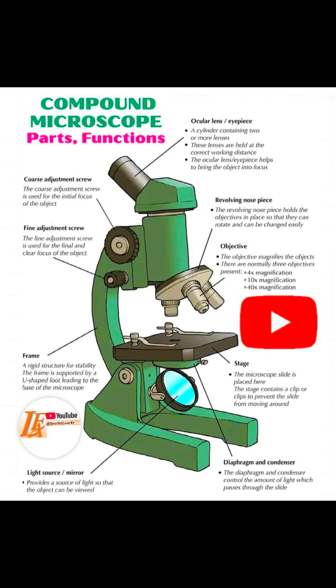We also have another part called the stage clip, which secures the slide on the stage. We have another one called the coarse adjustment knob, which moves the stage up and down for rough focusing.